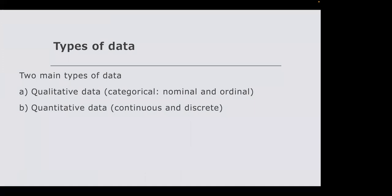Having identified your research philosophy — objectivist ontology and positivist epistemology — you need to consider how to collect your data. There are two overall types of data: categorical qualitative data, which includes nominal and ordinal, and quantitative data. I will start from quantitative data as it is easier, then move to categorical data.